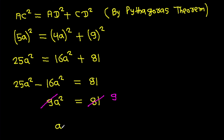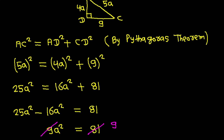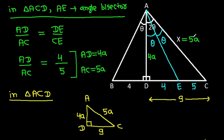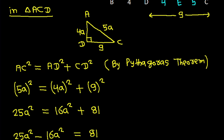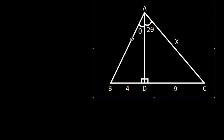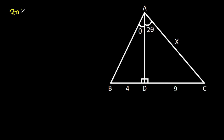So 25A squared minus 16A squared equals 81, giving 9A squared equals 81, so A squared equals 9 and A equals 3. Therefore X equals 5 times A equals 5 times 3, which is 15. So X is 15.